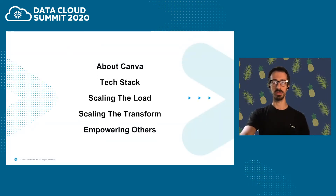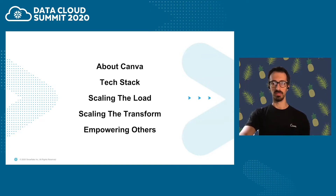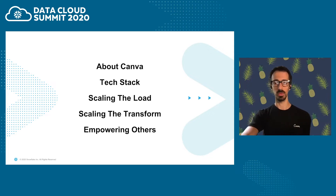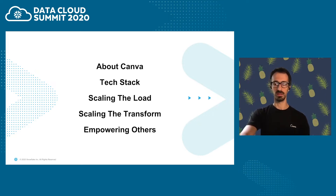Today we will be talking about the following topics. We will start with a bit of context on Canva — who we are, what we do, and we'll also share some data insights on our teams and how they operate. Next, in the tech stack, we will talk about the tools and technologies we use to achieve our goals in the scope of the warehouse. Finally, we will go through how we approach the scale problem, framed into three parts: the load, the transform, and the people.